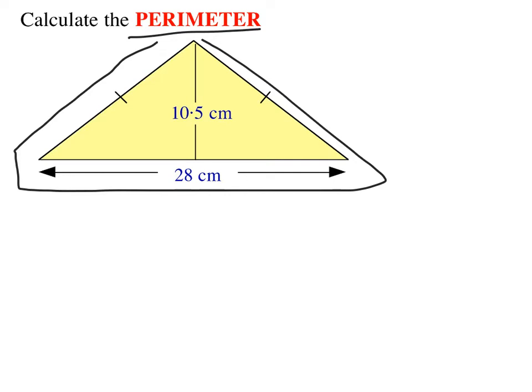So that means I need to work out the distance here, the distance here, and the distance here. Now, we've been helped a little bit. We've been given this distance, 28 centimeters, and we've been told that both these sides are the same, so I only need to work out one of those sides.